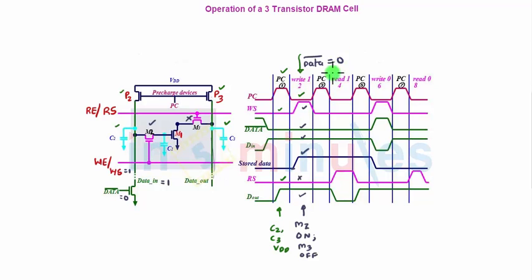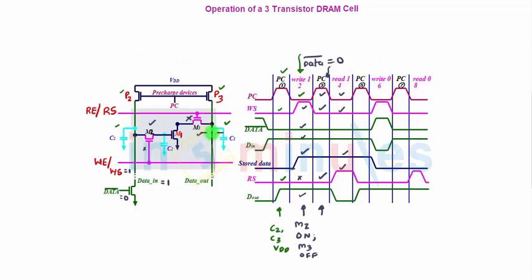Before read 1, make PC equal to 1 again — C2 and C3 go back to VDD. Word select goes to 0 and read select is already 0, holding all values. For read 1: read select goes high and word select goes low. M3 turns on, and since 1 was stored on C1, M1 is also on. C3 starts discharging towards 0 through M3 and M1. D out, initially at VDD, lowers slowly towards 0, indicating a 1 is written on C1. Data bar stays 0 and D in stays at VDD.